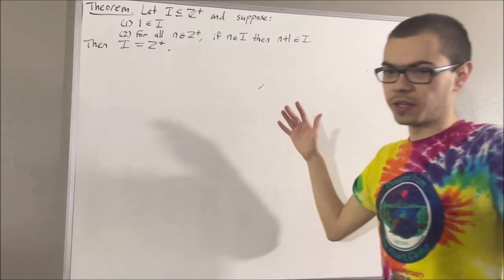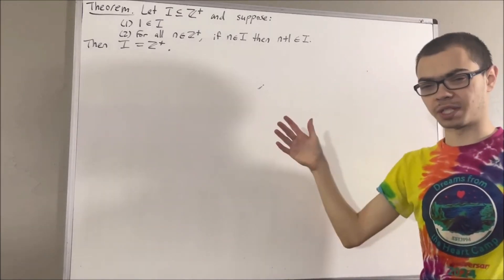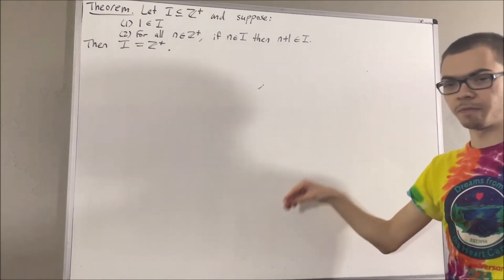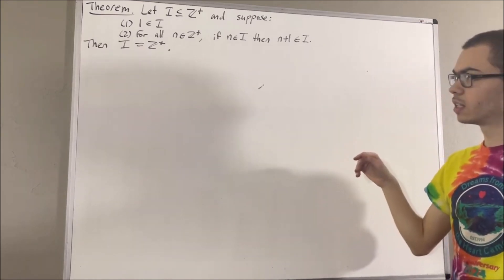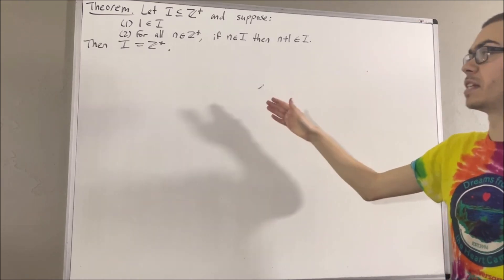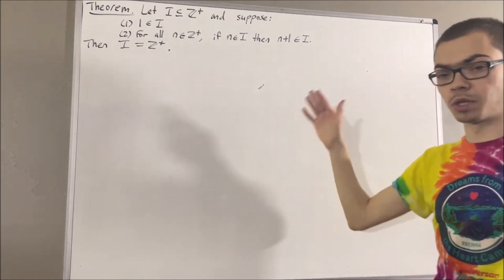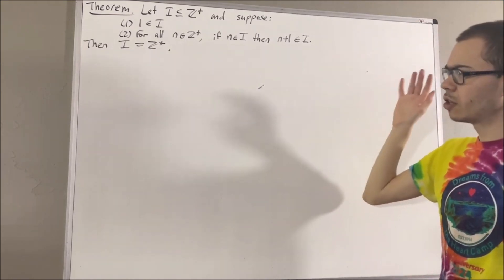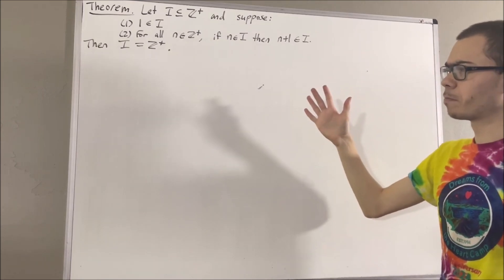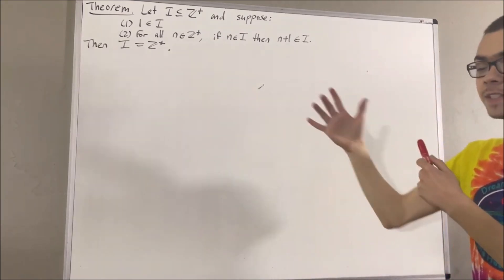Now, in this series, we are using a list of 10 axioms for the real number system, and I'll leave that list of axioms in the description below. At this point, we have defined the positive integers as a subset of the real numbers, and the way we defined it was we first defined the notion of an inductive set.